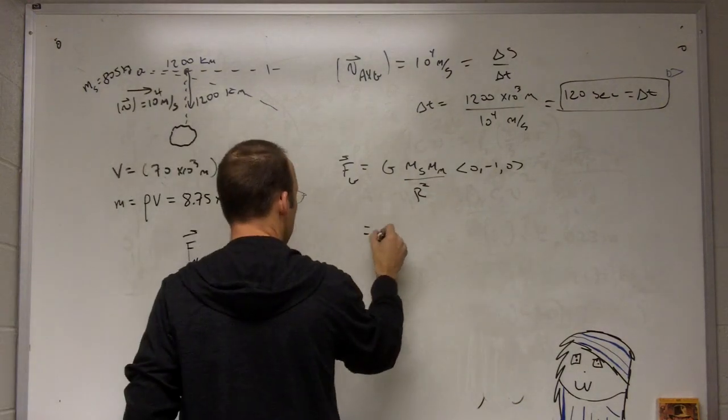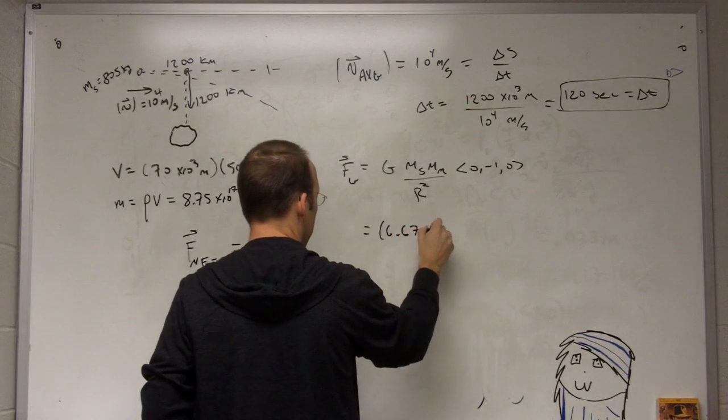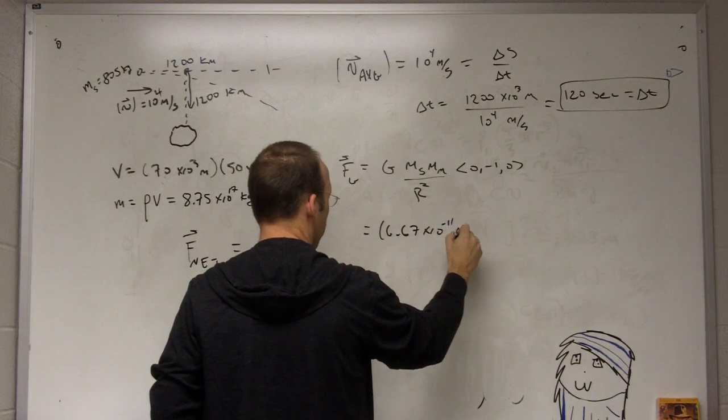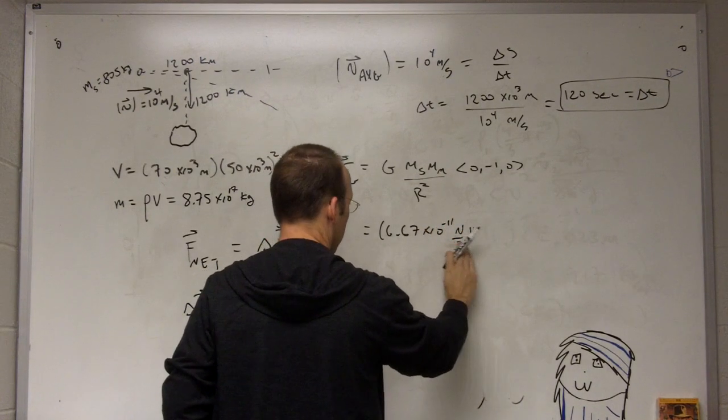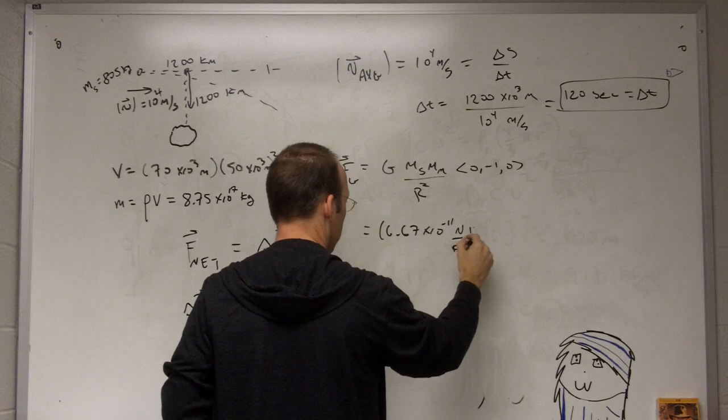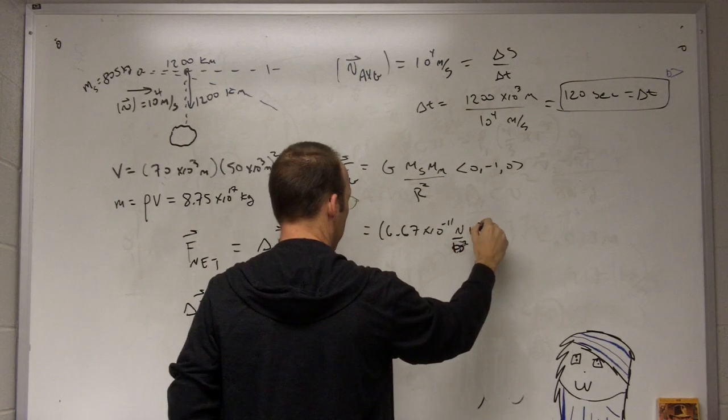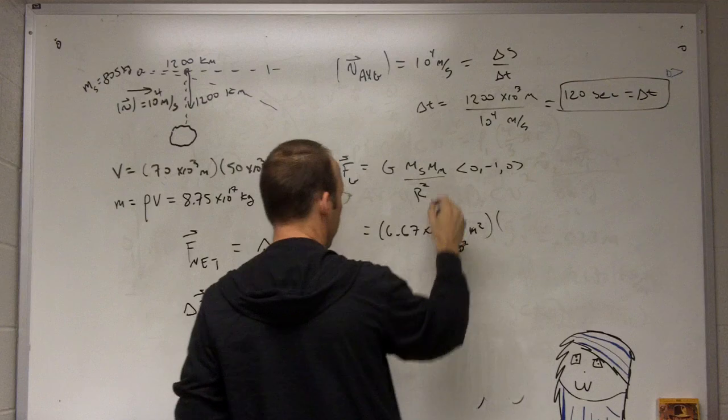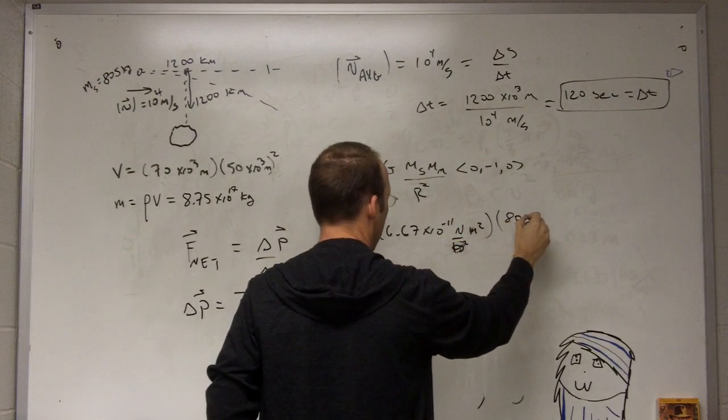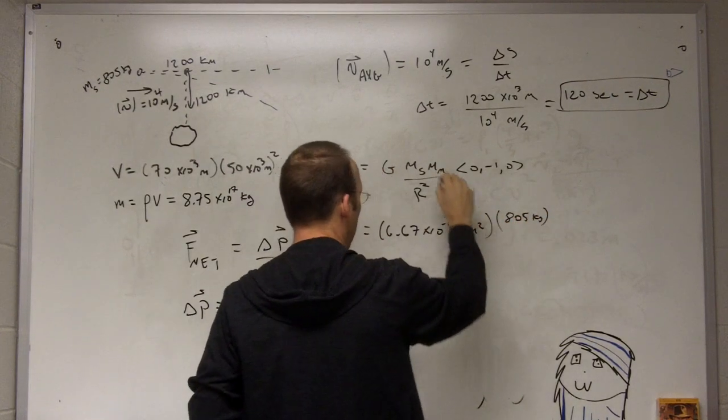So I can just say 6.67 times 10^-11 newtons meters squared, I'm sorry, kilograms squared meters squared, that's G. The mass of the spacecraft is 805. They gave that.